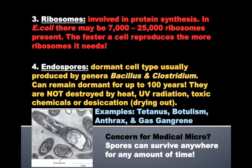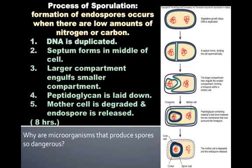Even removing water from the environment doesn't destroy endospores, even though we know all cells need water. Examples of infections caused by bacteria that produce endospores include tetanus — which is why you get a tetanus shot — botulism, anthrax, and gas gangrene. After 9/11, there were letters distributed through the mail with anthrax spores present in them — very dangerous. That picture on the bottom left shows an endospore forming inside a Bacillus bacterium.